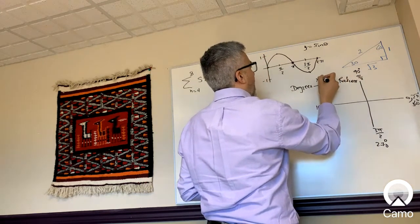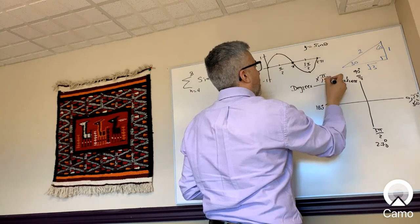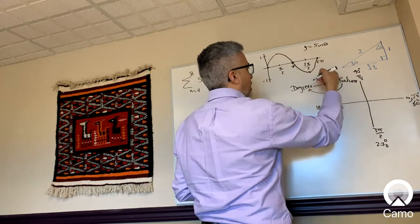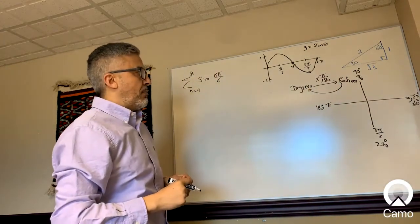To convert degrees to radians, multiply by pi over 180. To go from radians to degrees, multiply by the reciprocal, which is 180 over pi.